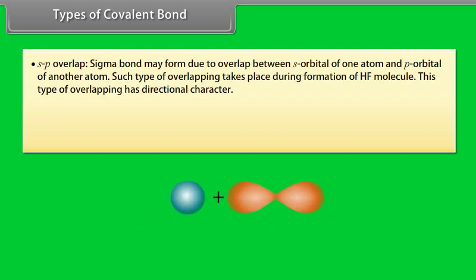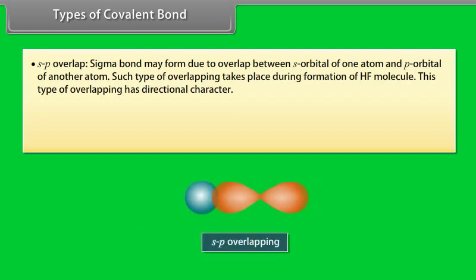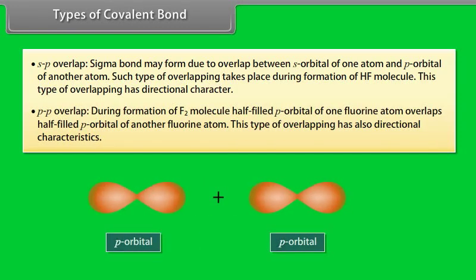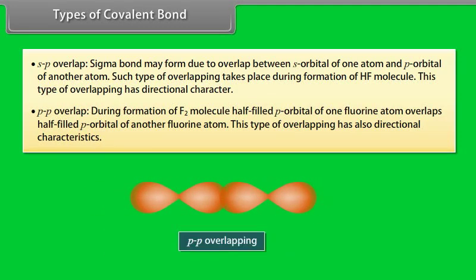S-P overlap: a sigma bond may form due to overlap between the S orbital of one atom and the P orbital of another atom. Such overlapping takes place during formation of HF molecule and has directional character. P-P overlap: during formation of F2 molecule, the half-filled P orbital of one fluorine atom overlaps with the half-filled P orbital of another fluorine atom. This type of overlapping also has directional characteristics.